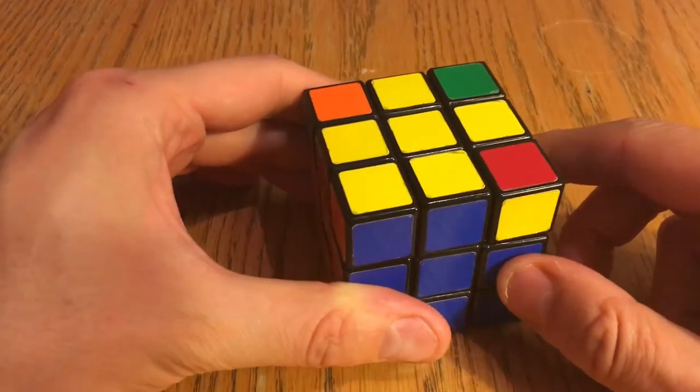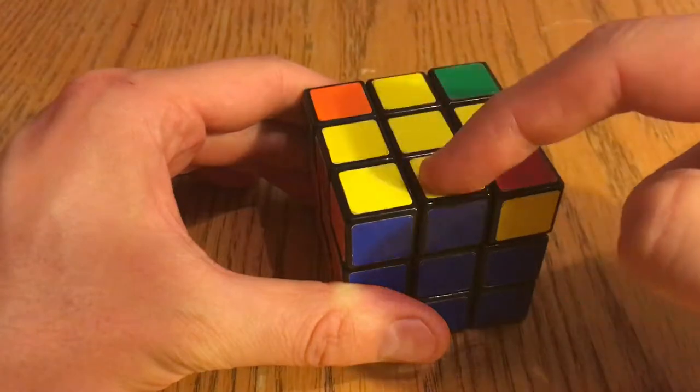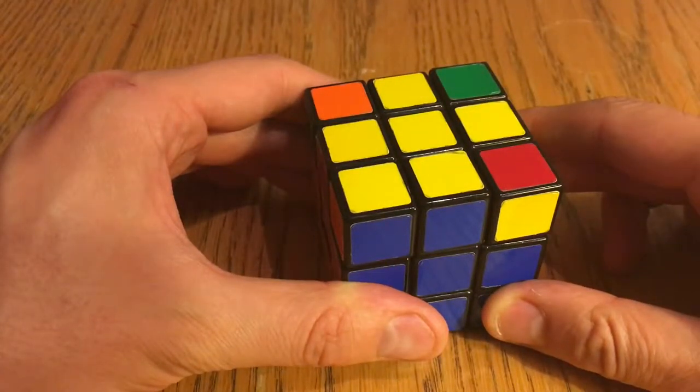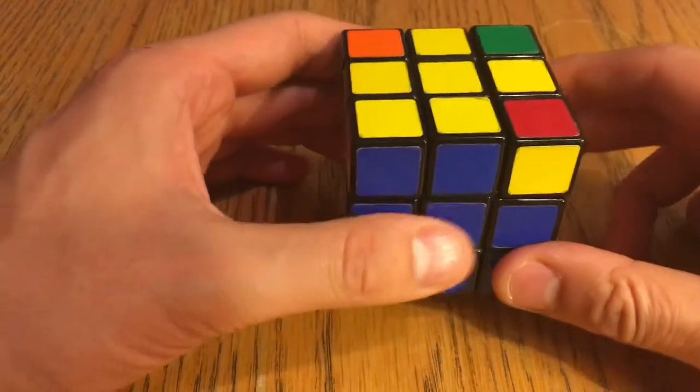So in the beginners method, when you have a yellow cross, it asks you to perform the same algorithm over and over again. That algorithm is called Sune and it goes something like this.